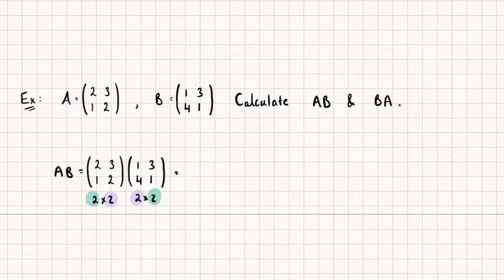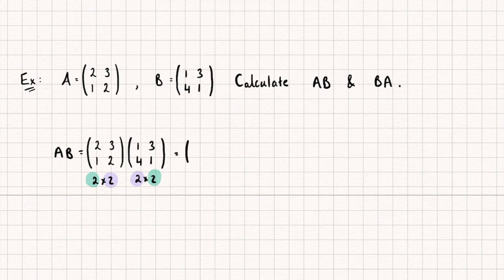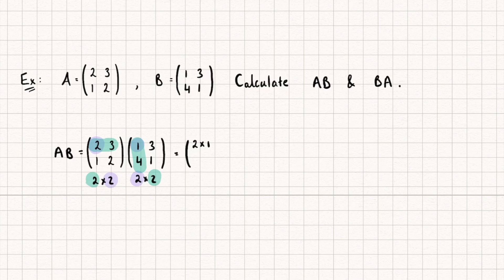Initially it might look a bit complicated but it's actually very simple once you practice. Let's write it generically. We're going to get a resulting matrix C. This element C11 — in the first row, first column — is calculated by multiplying the first row of the left matrix by the first column of the right matrix. So I'm going to do the first element of the first row by the first element of the first column: 2 multiplied by 1, then add 3 multiplied by 4.